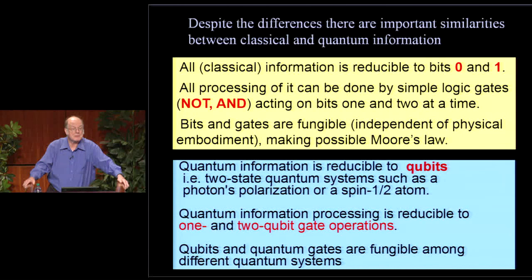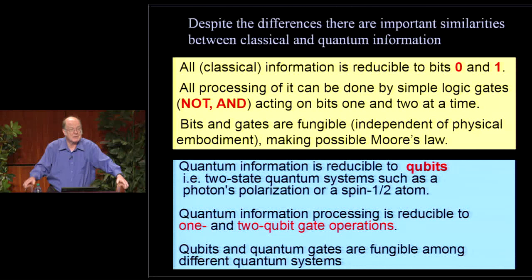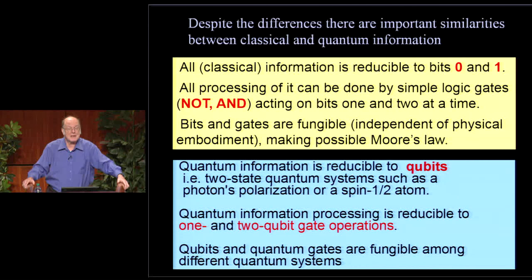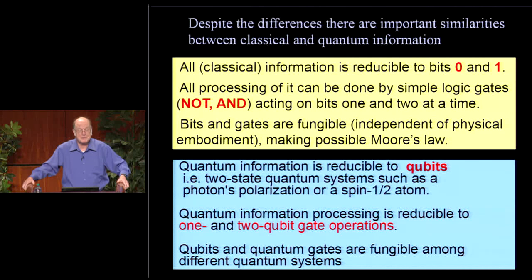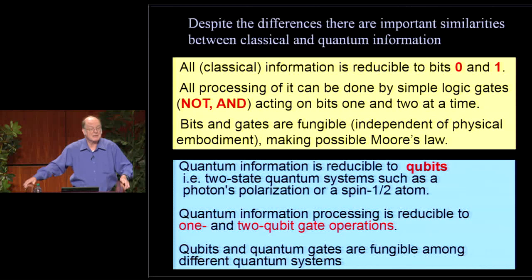Similarly, quantum information is reducible to what we call qubits—quantum systems capable of two distinguishable states—for example, a polarized photon or a spin-one-half atom. Any processing you want to do to quantum information can be done by acting on qubits one and two at a time. Just as classical bits make software independent of hardware, in principle the things you do with quantum information are independent of the particular physical embodiment—qubits are fungible among different quantum systems, just as classical bits are fungible among different storage and transmission media.